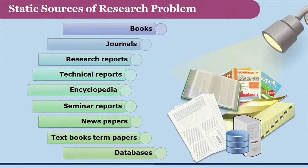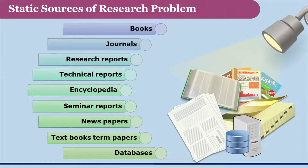The static sources for the research problem are basically the existing literature. The literature may be in the form of books, journals, research reports, technical reports, statistical reports, census data, encyclopedias, seminar reports, newspapers, term papers, and so on.